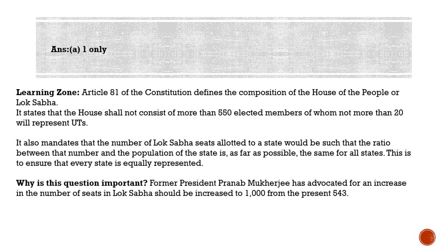Recently, Parliament passed the 126th Constitution Amendment Bill, 2019, which ended the provision for the nomination of Anglo-Indians to the Lok Sabha and state assemblies. So at present, the maximum strength is 550, not 552. The Lok Sabha currently consists of 543 members — 530 directly elected from states and 13 from Union Territories. The total number of seats allocated to various states is based on the 1971 census, which shall remain unaltered till the first census after the year 2026.